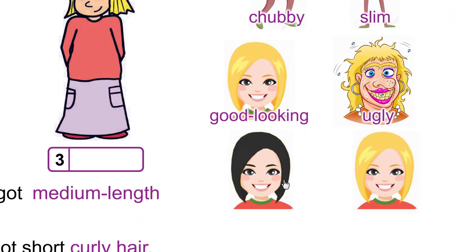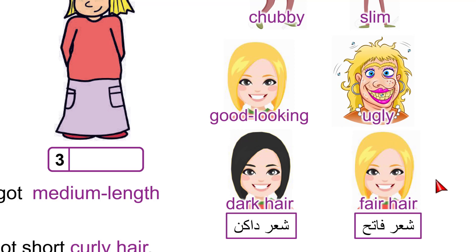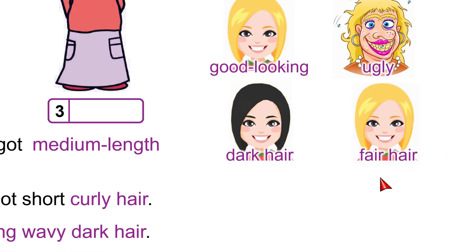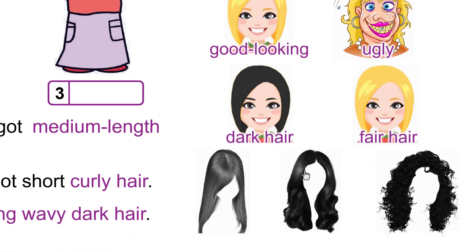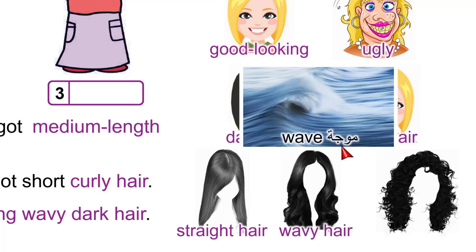Dark hair means hair close to being black. Fair hair is hair close to being white — very light in color. For hair type: straight hair, wavy hair — wavy like sea waves — and curly hair.